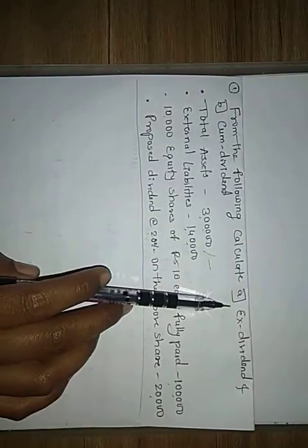So in the items — total assets, external liabilities, and equity shares — if the extra item that is proposed dividend is added, then the question will ask us to calculate x-dividend and cum-dividend.